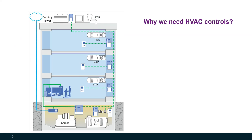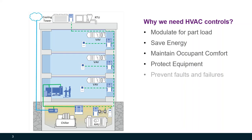But first, why do we need HVAC controls in the first place? If we didn't have HVAC controls, all of our HVAC equipment would be operating at full load all the time. By putting in automatic DDC controls, we can now modulate our equipment for part load. This saves energy, does a better job at maintaining occupant comfort throughout the building, protects equipment, prevents faults and failures, and helps inform maintenance staff when HVAC equipment might not be working correctly.